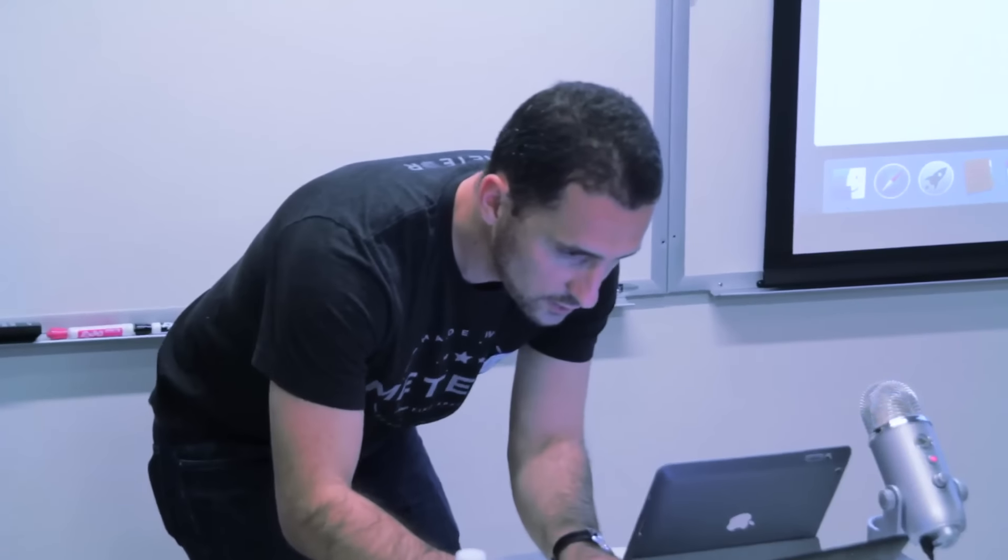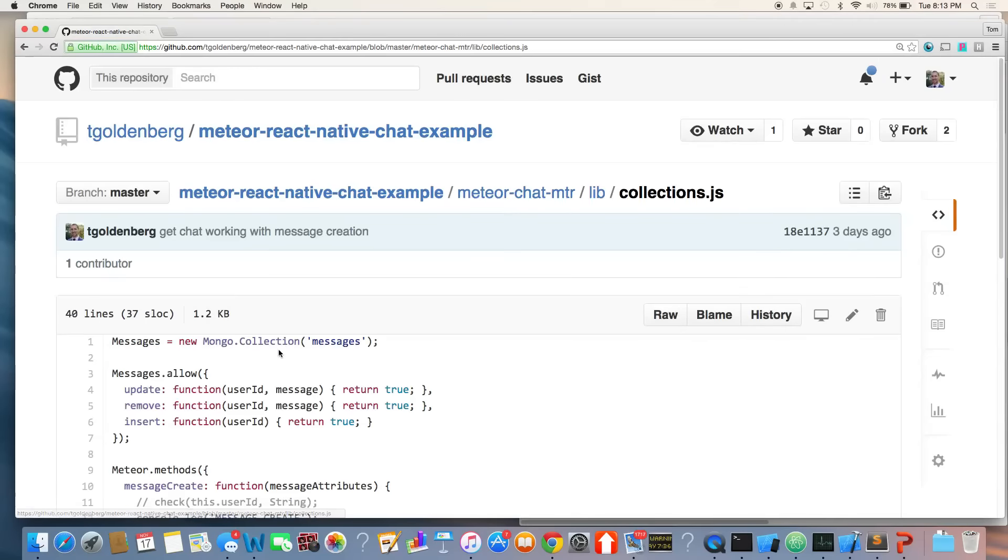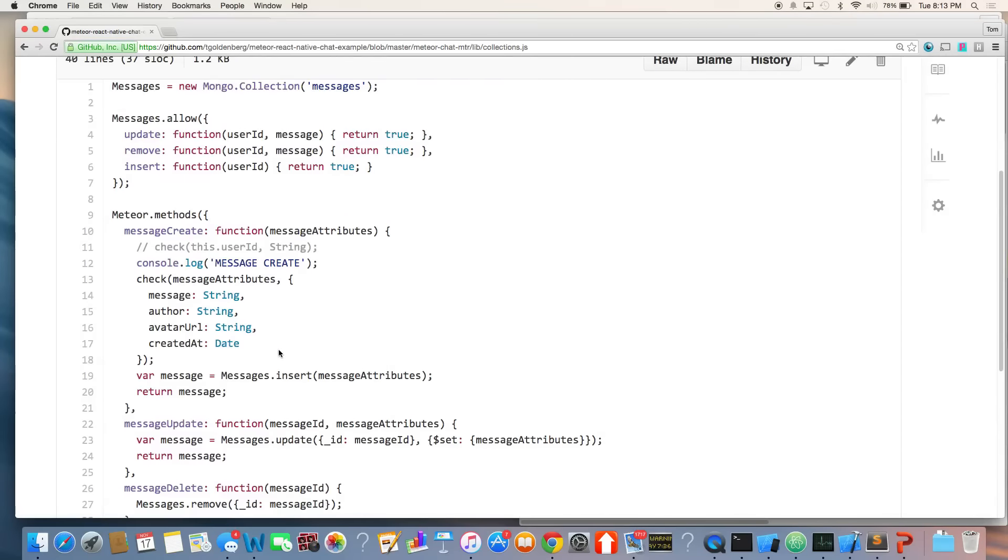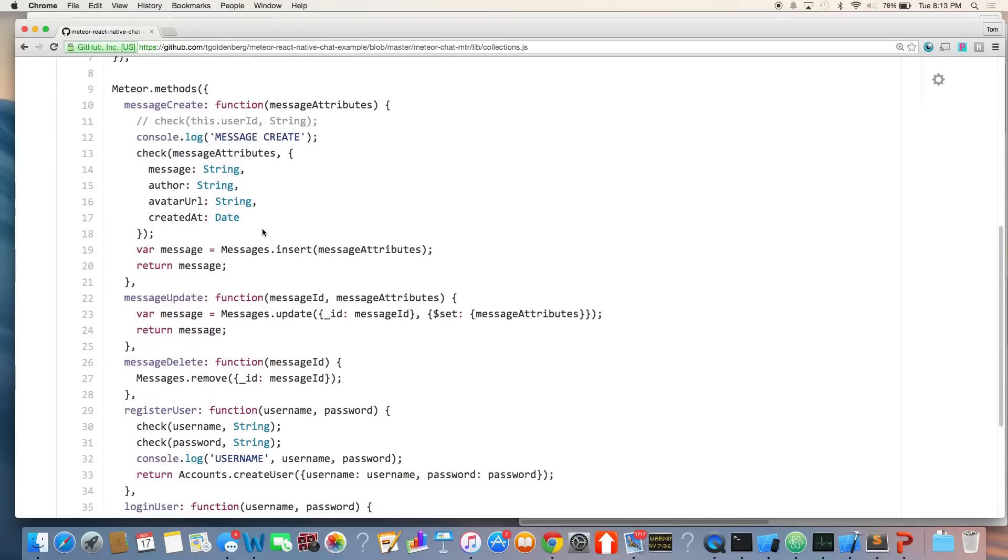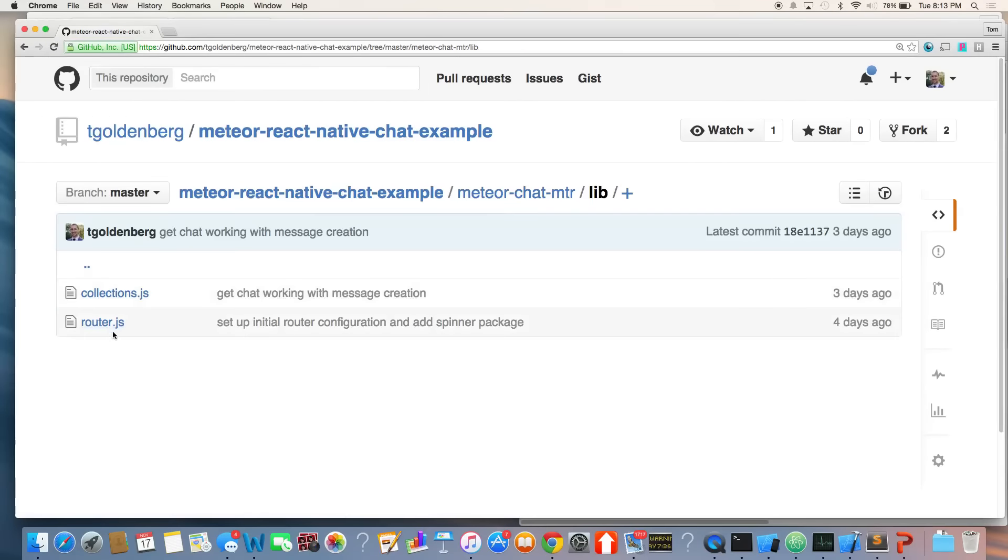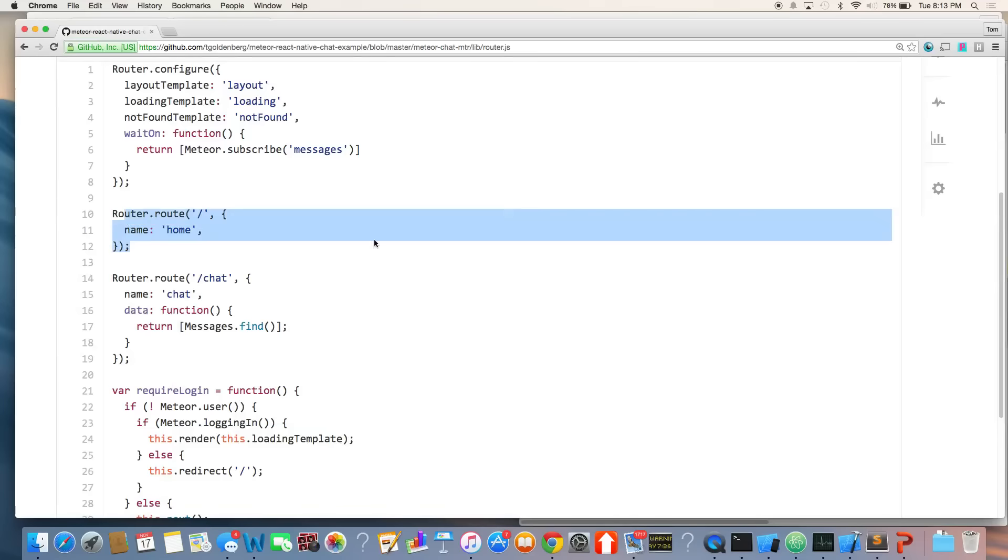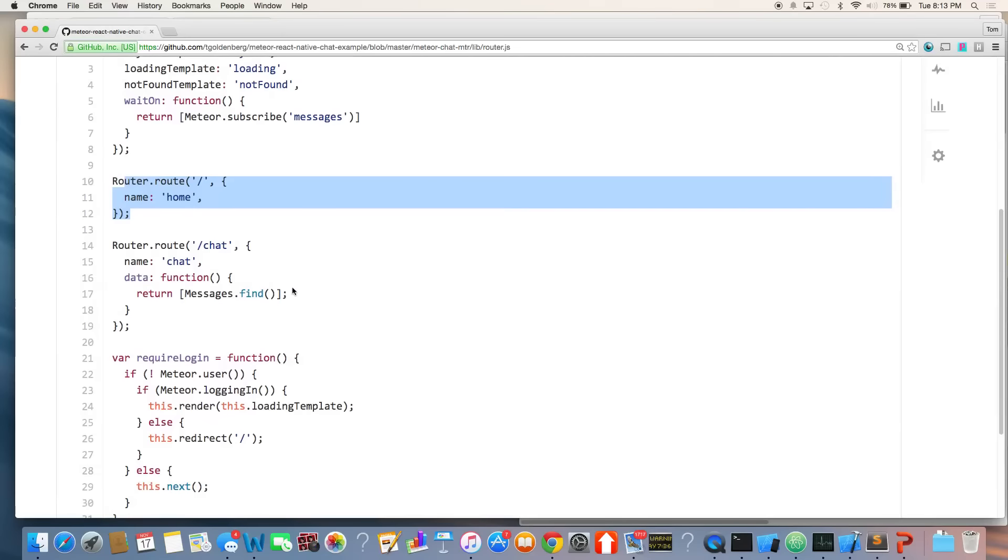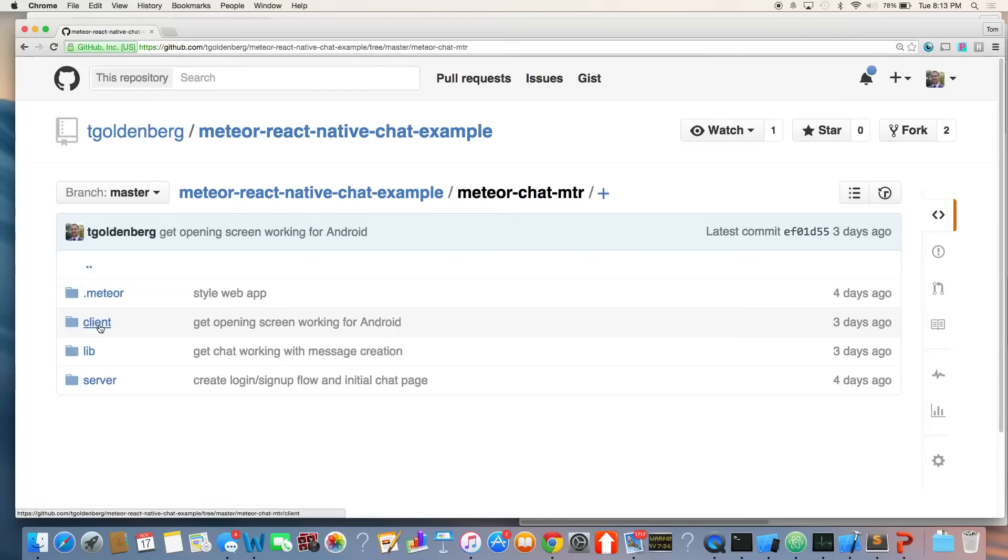So to show you the Meteor app first, it should be pretty familiar for most Meteor developers. You have a collection, messages and collection. You have a create method, and it's just inserting into MongoDB. My router, I use IronRouter. And there's just, like I said, a home route, and there's a chat route. And it's just subscribing to those messages. So it should be pretty straightforward so far. And it's supposed to be a simple example.